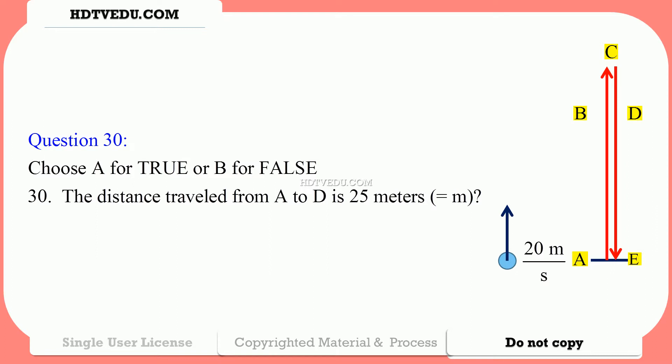C to D, the distance is also 5. So what is the total distance traveled? A to B: 15. B to C: 5. C to D: 5. So 15 plus 5 plus 5 — 15 plus 10 is 25. The answer is correct. True.